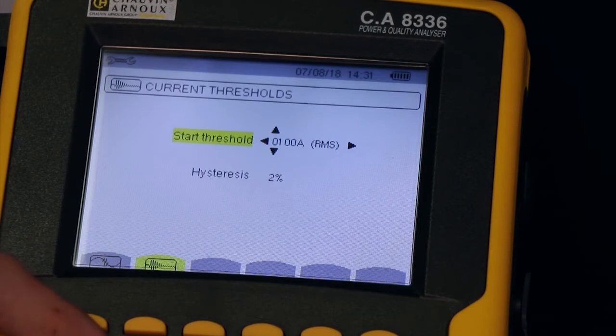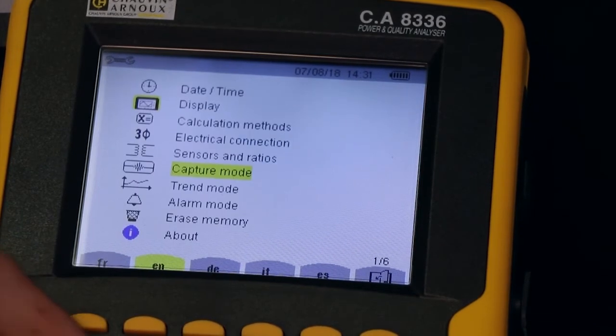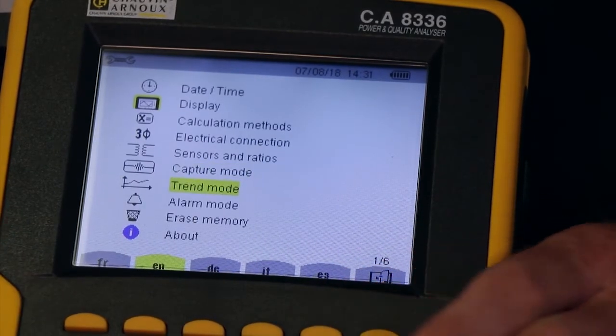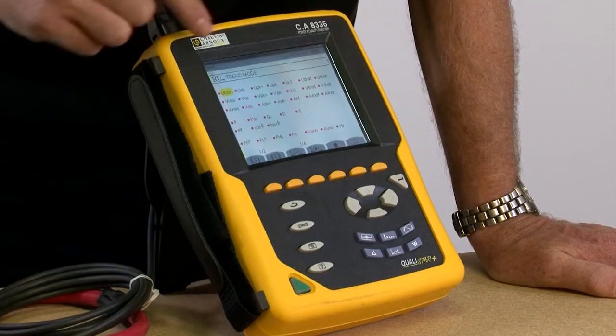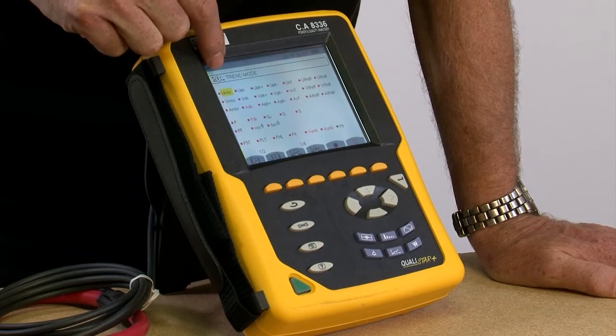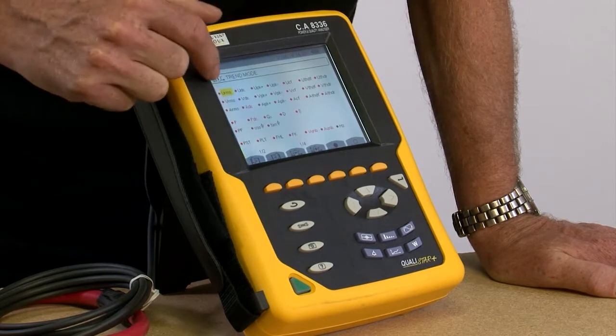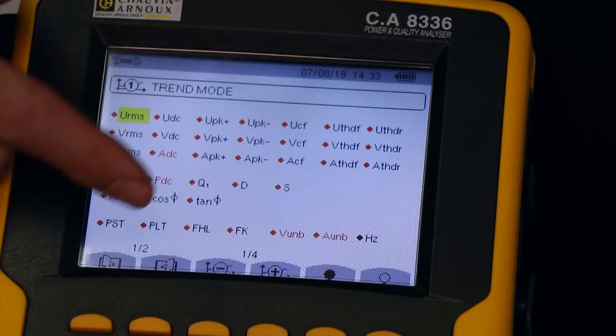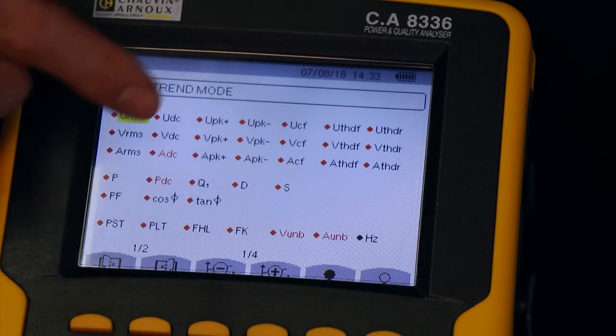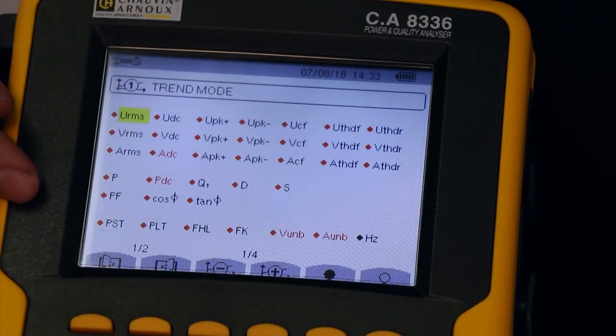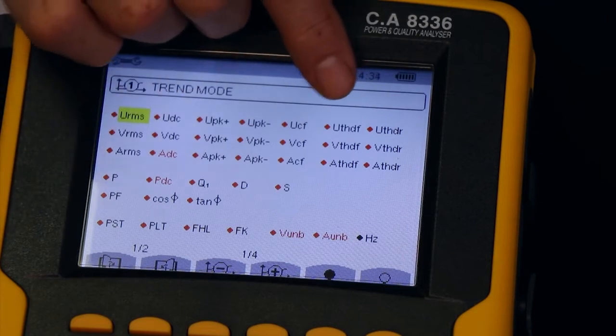The next setup screen down is trend mode. And in trend mode, we tell the product what parameters to record. So, in trend 1 at the moment, we have all of the parameters selected. We've got volts rms, amps rms, voltage peak, positive peak, negative peak, power factor, phase angle, cos phi, etc.